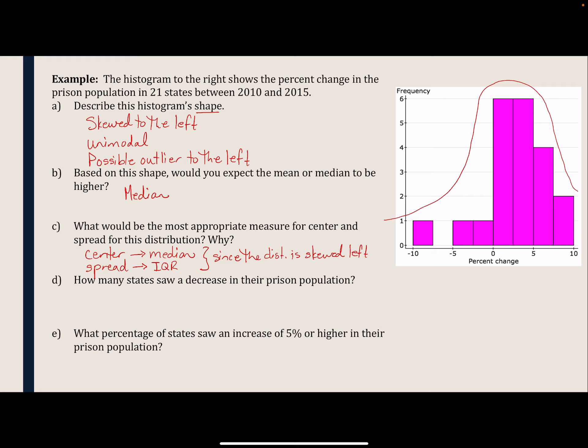Parts D and E ask us to read the histogram. Part D asks how many states saw a decrease in their prison population. Anything with negative percent changes corresponds to the bins on the left side. It looks like we have a decrease in population in three bins, each with one state in them — one here, one here, and one here. So it looks like three states saw a decrease in the prison population.